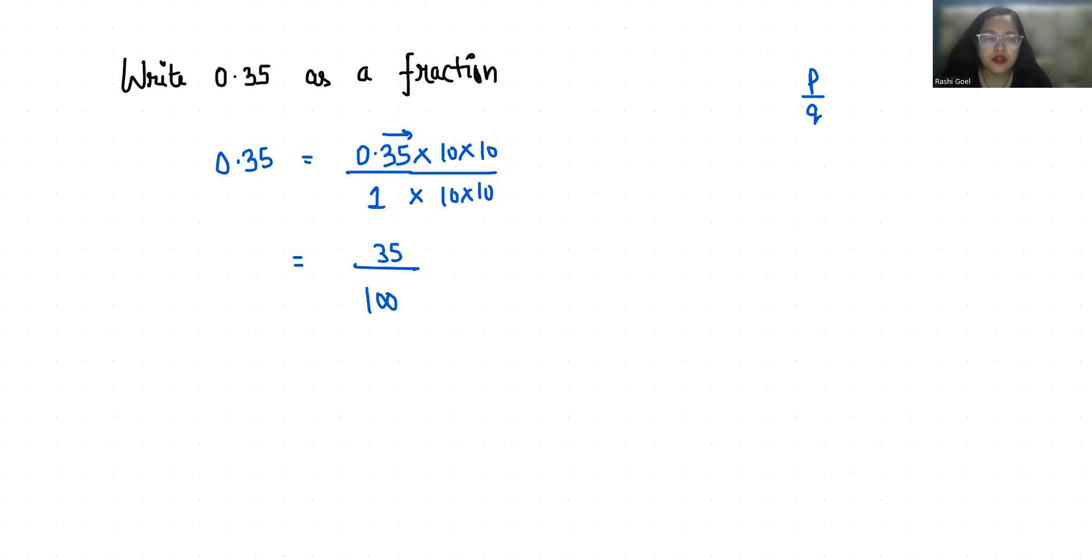Now it's in fraction form, but we are going to reduce it by dividing by 5 because the HCF of 35 and 100 is 5, so it is 7 and it is 20. So 0.35 in terms of fraction is 7 by 20.